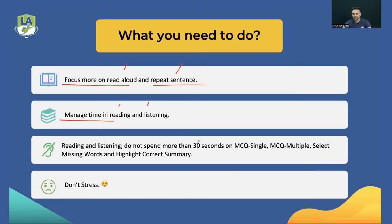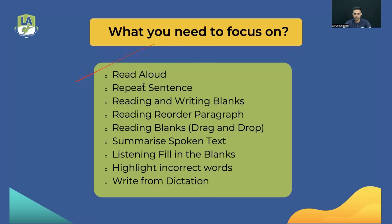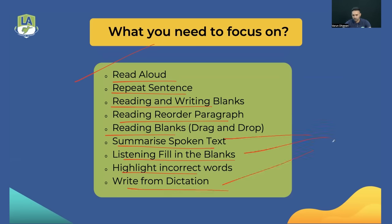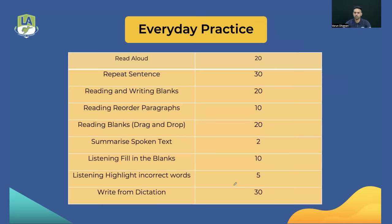In reading and listening, don't spend more than 10 seconds on MCQ Single, MCQ Multiple, Select Missing Words, and Highlight Correct Summary. Focus on: Read Aloud and Repeat Sentence from speaking, both Reading Blanks and Reorder Paragraphs somewhat, Summarize Spoken Text from listening, Listening Blanks, Highlight Incorrect Words, and Write From Dictation. If you're missing out in listening, make sure your spellings are correct — good spelling in Summarize Spoken Text, Listening Fill in the Blanks, and Write From Dictation will raise both your listening and writing scores.